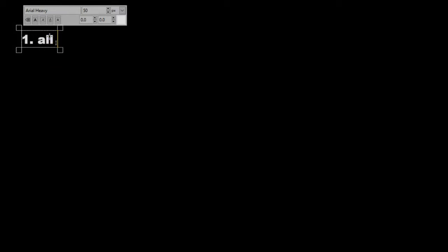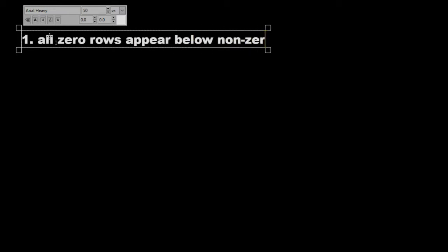There's a few rules, four main rules to this. The first rule of a row reduced matrix is that all zero rows appear below non-zero rows. A zero row is any row in the matrix that is all zeros.